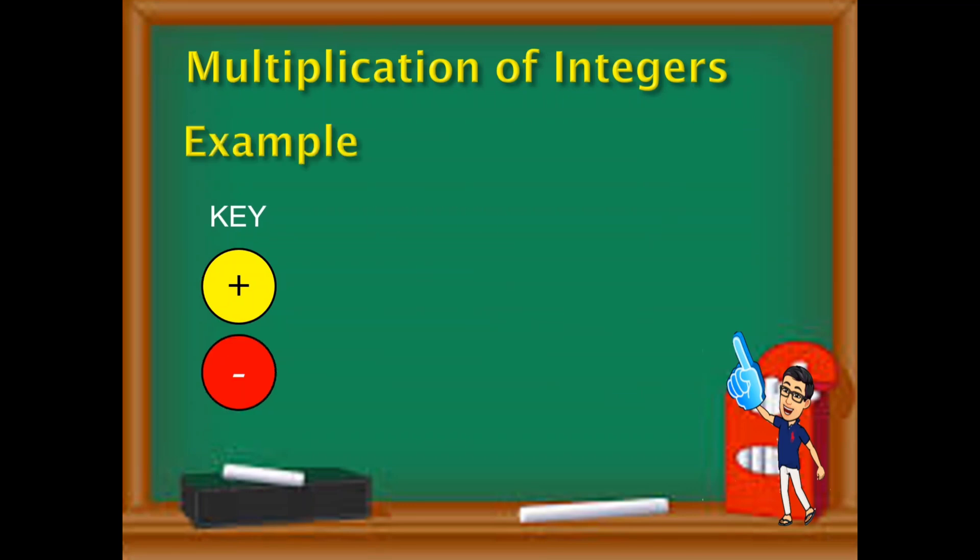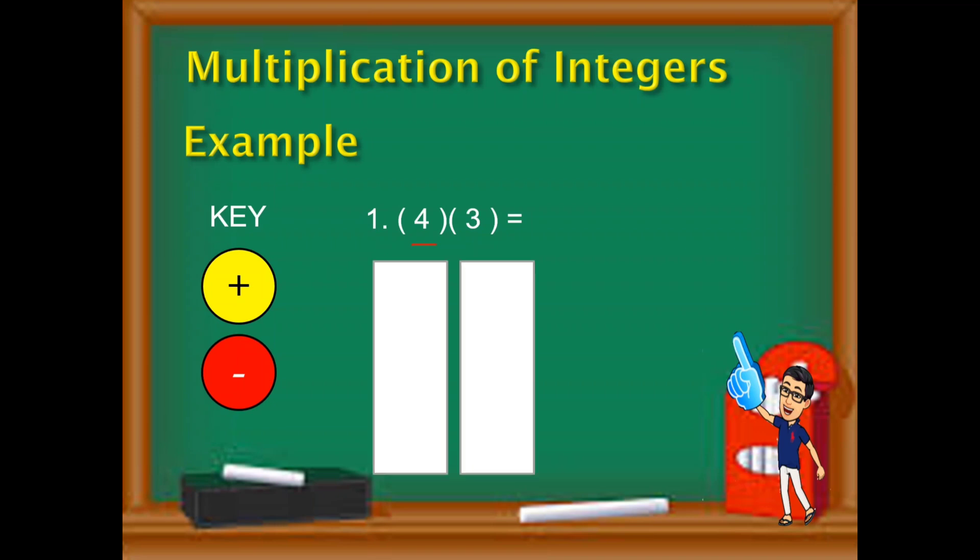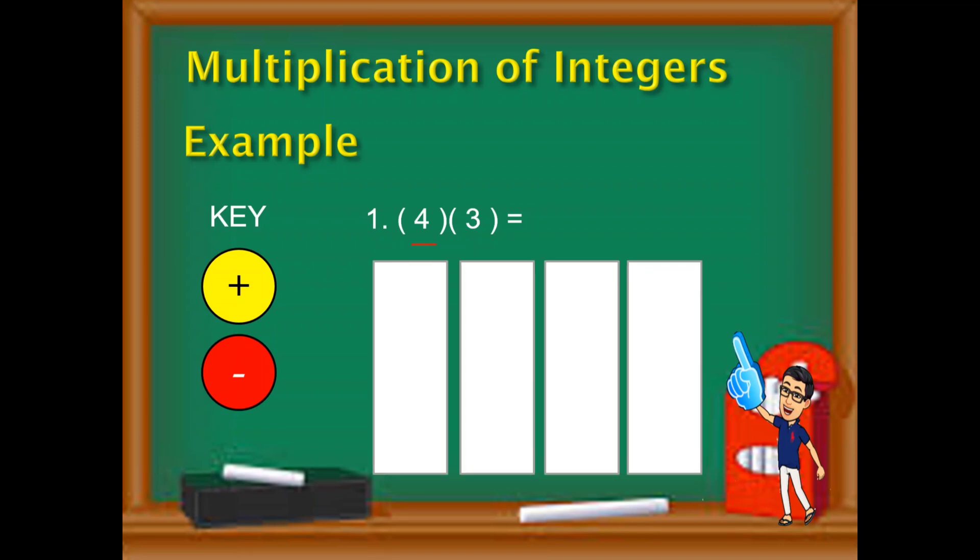Let's start an example. Let us consider that we are going to multiply 4 times 3. First thing that we need to look for is to look at the first integer. Ang first integer ay 4. That tells the number of groups. Yung 4, ang unang integer ang nagsasabi ng bilang ng group. Ibig sabihin, kailangan natin magkaroon ng apat na group. Then the second integer tells anong number yung ilalagay natin sa group, ilang bilang. So tatlo ang ilalagay natin dun sa group. Tatlong ano?